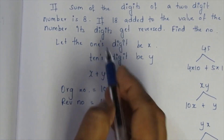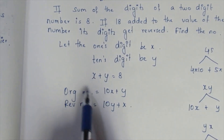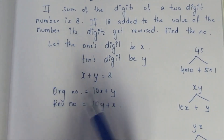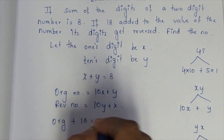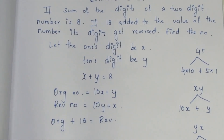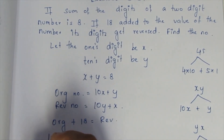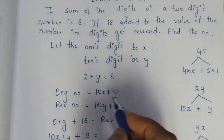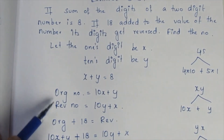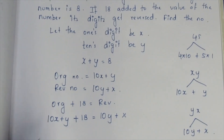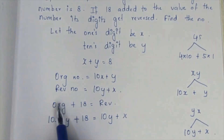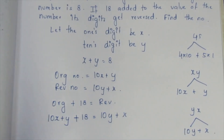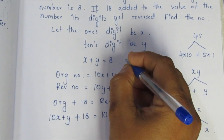If we add 18 to the value of the original number, it becomes the reversed number. So the equation is: 10x + y + 18 = 10y + x.